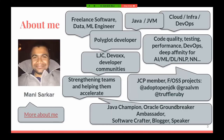A little bit about myself. I'm a freelance software, data, and machine learning engineer. I primarily write code in Java, but these days with all the data and machine learning adventures, I also write code in other programming languages, including Python and some other JVM languages. In my day job, I help strengthen teams and help them accelerate in their development process. If you'd like to know more about me, there's a link at the bottom of the slide.